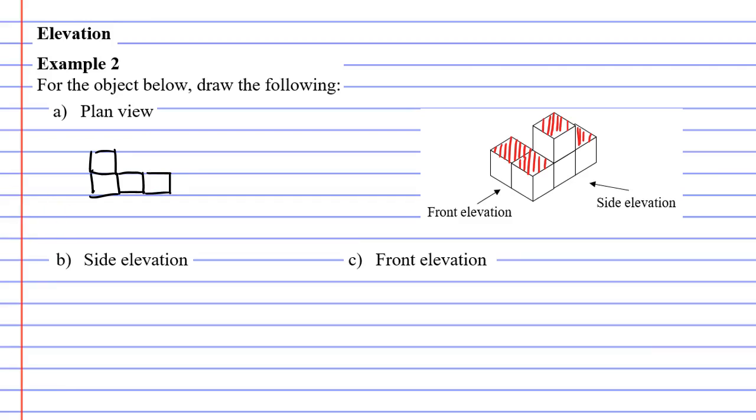Okay, now let's look at our side elevation. I'm going to color my side elevation in green. These are the squares I would see if I was looking from the side.